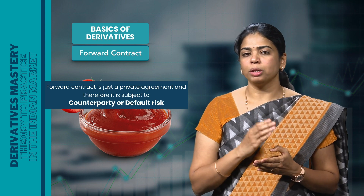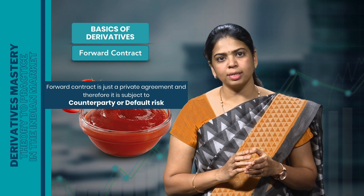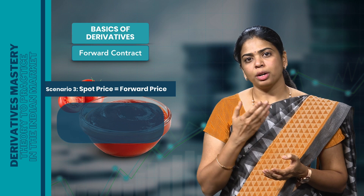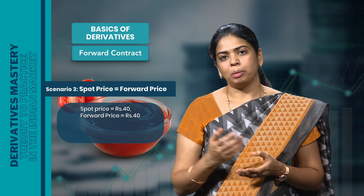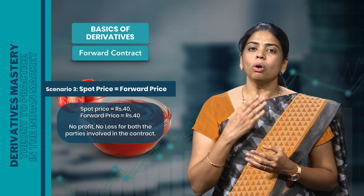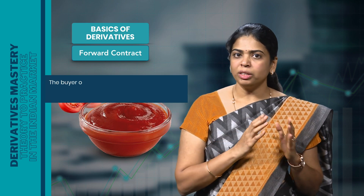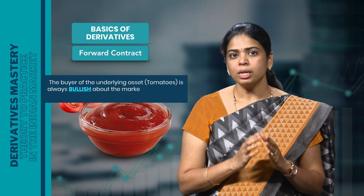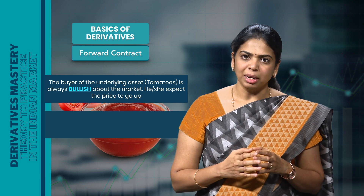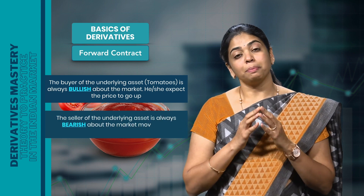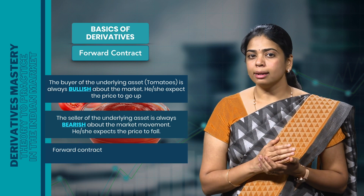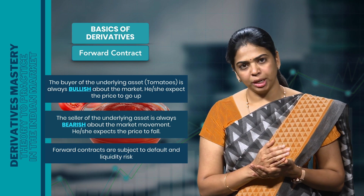In the third scenario, where the spot price on maturity is Rs 40 per kg — the same as the forward price — there is no profit or loss for both parties. Always remember: in a forward contract, the buyer of the underlying asset is always bullish about the market and expects the price to go up, while the seller is always bearish and expects the price to fall. In a nutshell, forward contracts are subject to both default risk and liquidity risk.